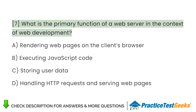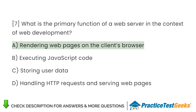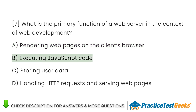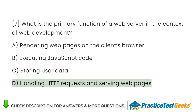What is the primary function of a web server in the context of web development? A. Rendering web pages on the client's browser. B. Executing JavaScript code. C. Storing user data. D. Handling HTTP requests and serving web pages.